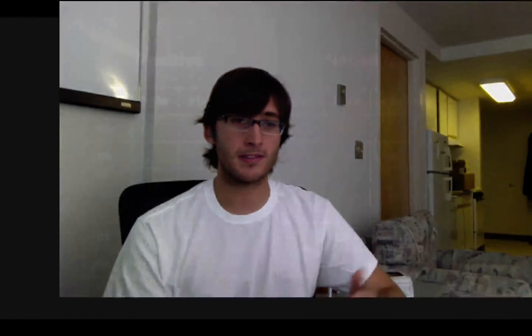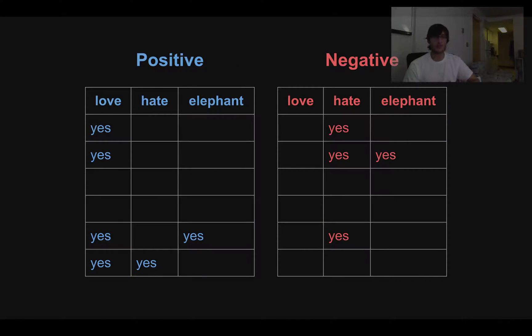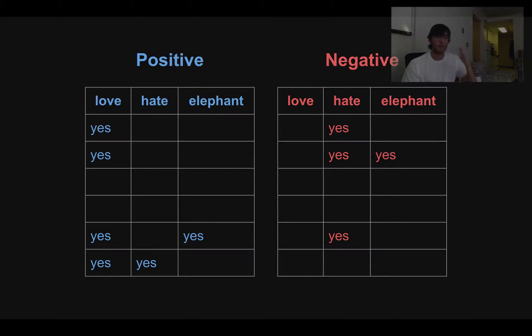Now I want to give a simple example of actually building a Bernoulli Naive Bayes classifier using a limited vocabulary of just three words — in real life we'd use thousands — but here we're only looking at 'love,' 'hate,' and 'elephant.' We're looking at twelve sentences: six positive and six negative. I built a table of whether each sentence used each word. The first two positive sentences used 'love' and didn't use 'hate' or 'elephant,' which is what we'd expect. The next two positive sentences didn't use any of the three words.